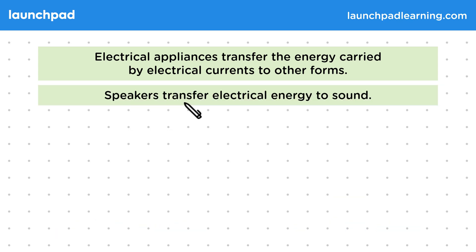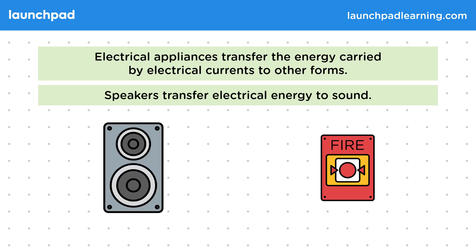Speakers transfer electrical energy into sound. A loudspeaker is used for amplifying sounds, and an alarm is used for getting attention in an emergency. Other examples that transfer energy to sound include alarm clocks, radios, and also megaphones.